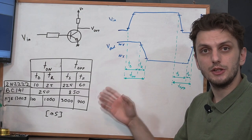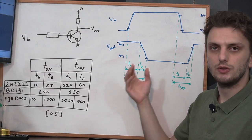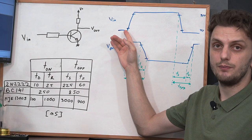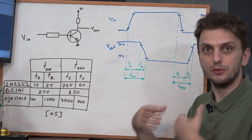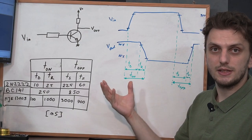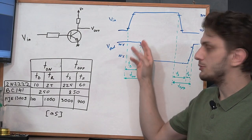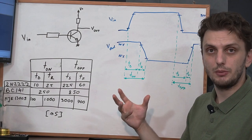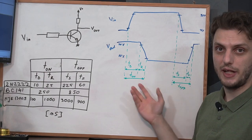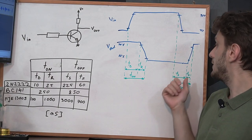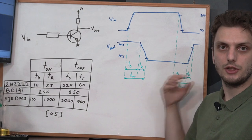For the on time, there are two time intervals of interest. First is the delay time — the time between when your input signal reaches 10% and when your output signal reaches 90%, so the time it takes the transistor to react. Then there's the rise time, which in this case is a falling time, where the output signal drops between 90 and 10%. For the off time, again we have a storage time — the time it takes the transistor to react to the falling input signal — and then a fall time, which is effectively a rise time, the time it takes the transistor to actually fully turn off.